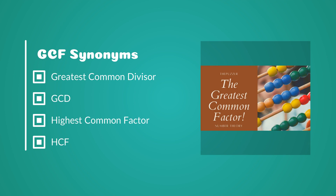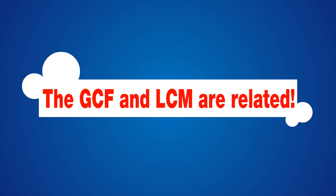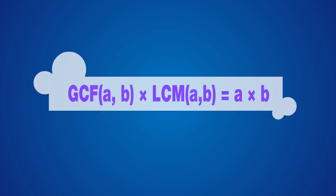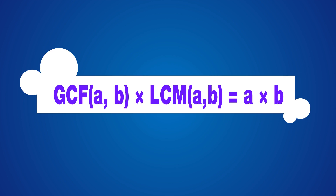Here are some other words that are sometimes used to refer to the greatest common factor. The greatest common factor and the least common multiple are closely related. If you don't know what the least common multiple is, just watch our video on it. The greatest common factor of two numbers A and B, multiplied by the least common multiple of the same two numbers A and B, is equal to their product.